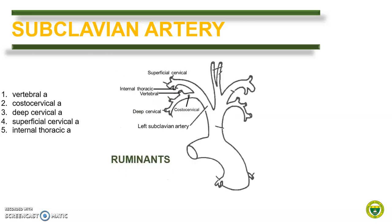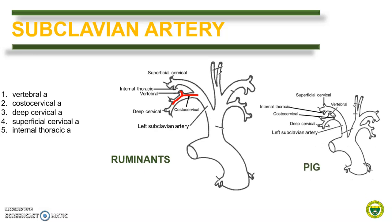In ruminants, the vertebral artery arises from the costocervical artery, meaning they only have three main direct branches from the subclavian artery, with the rest as sub-branches. This is in contrast to the dog, in which the vertebral artery arises separately from the costocervical artery. This branching pattern in ruminants is the same as in the pig.